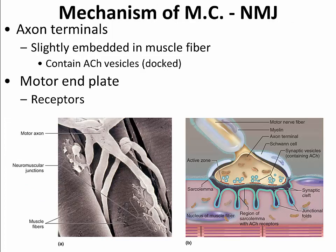Next we look at the actual anatomy of the neuromuscular junction. Figure 9.8 on page 263 shows an electron micrograph on the left where we can see the motor axon connecting to several different muscle fibers. The axon terminal is slightly embedded in the muscle fiber. We see vesicles docked at the presynaptic membrane containing acetylcholine, and we see the sarcolemma — the plasma membrane of the muscle fiber.